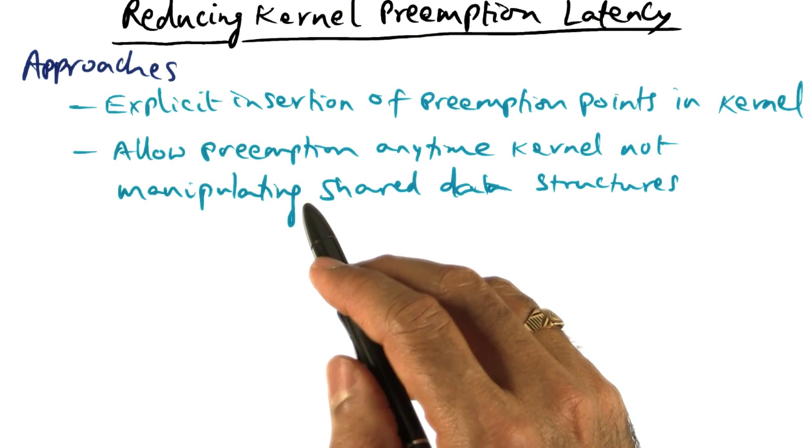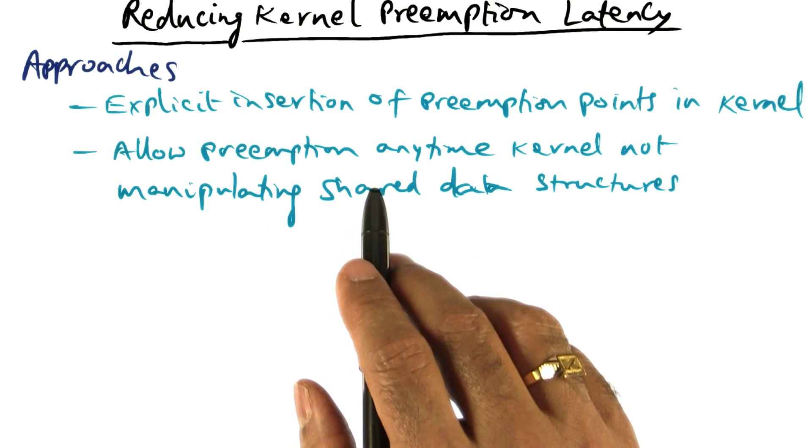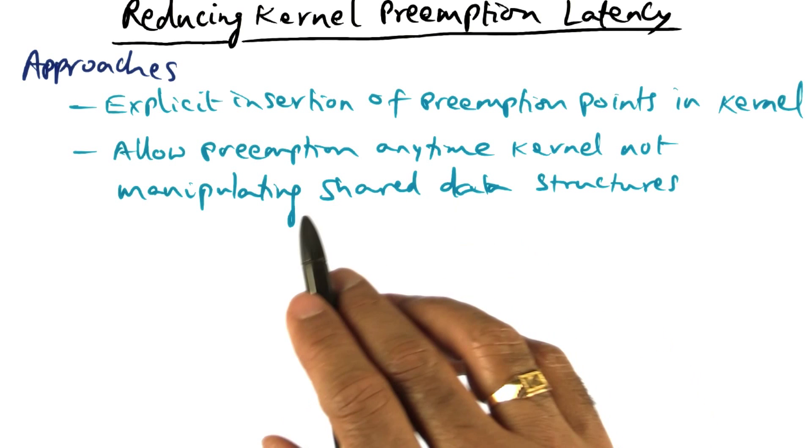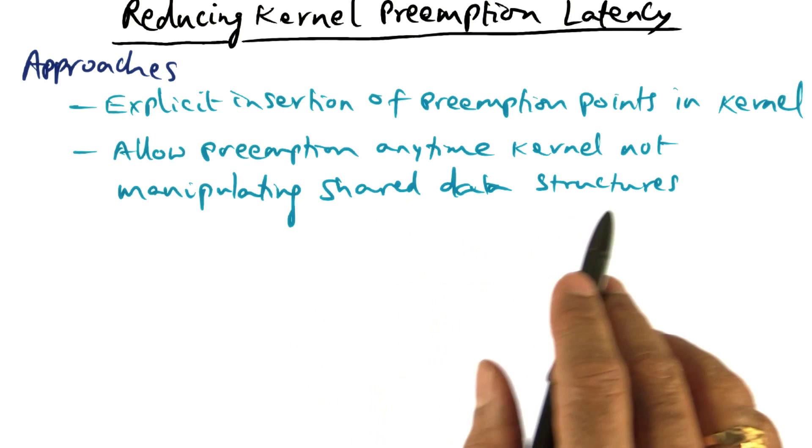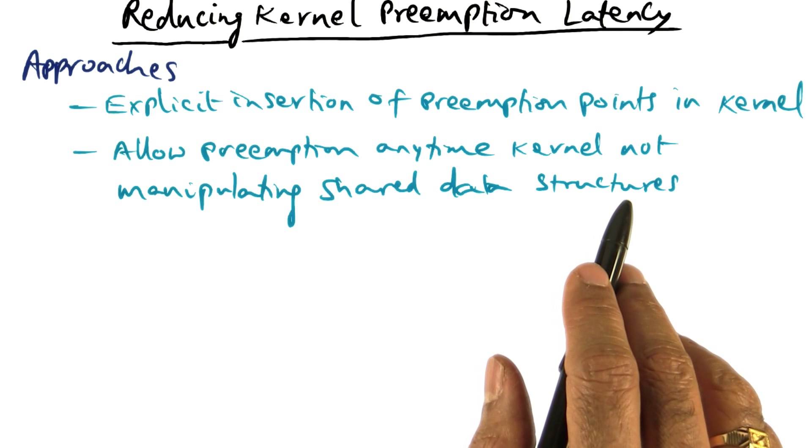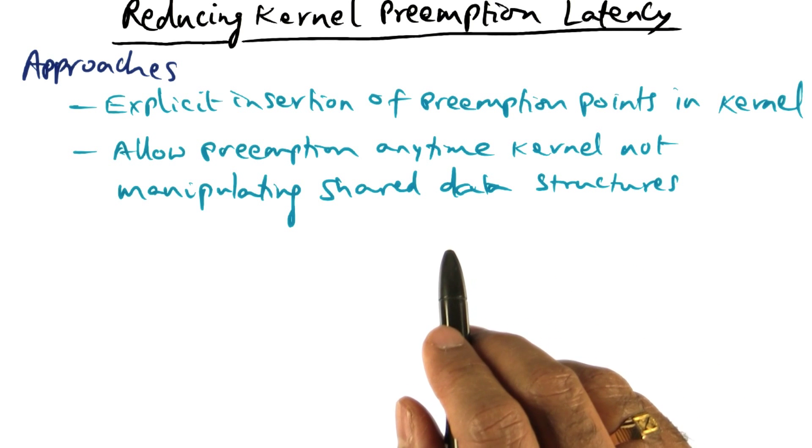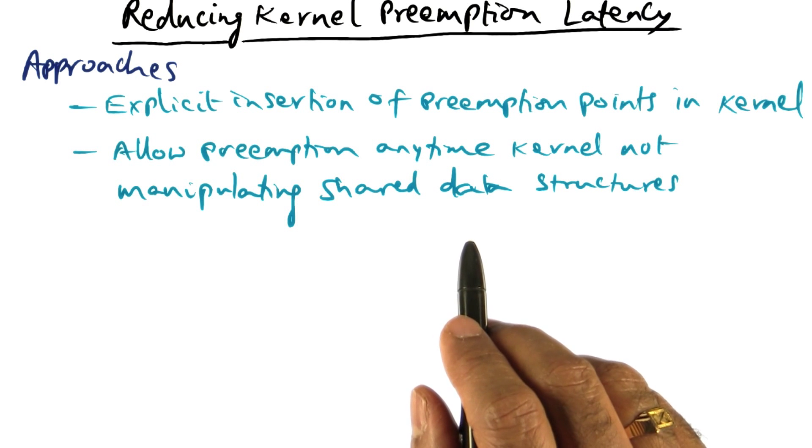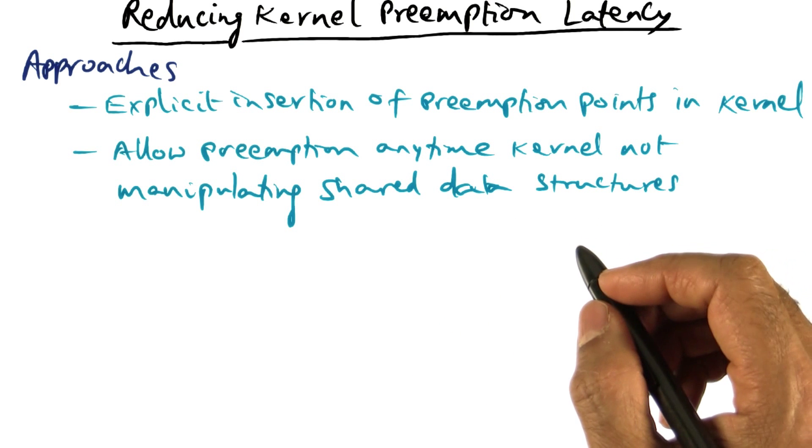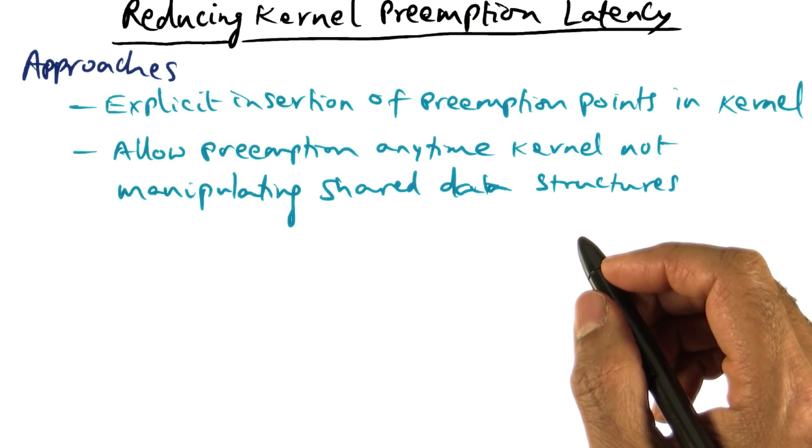The second approach is to allow preemption of the kernel any time the kernel is not manipulating shared data structures. Now, the reason why you don't want the kernel to be preempted is because it is manipulating some shared data structures. And if you preempt that, that can result in race conditions in the kernel—bad news.